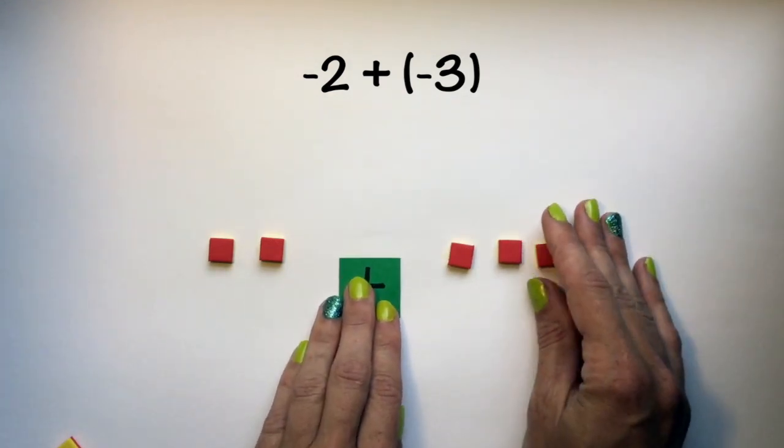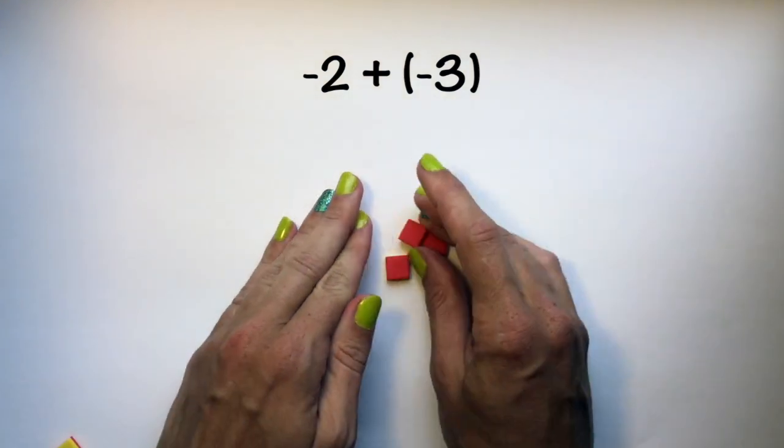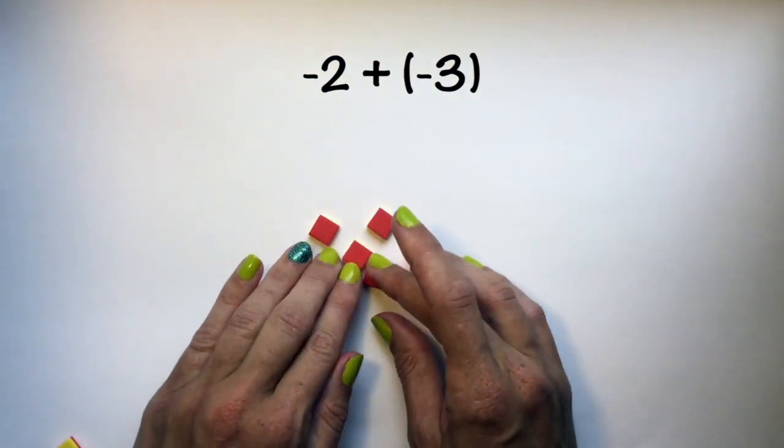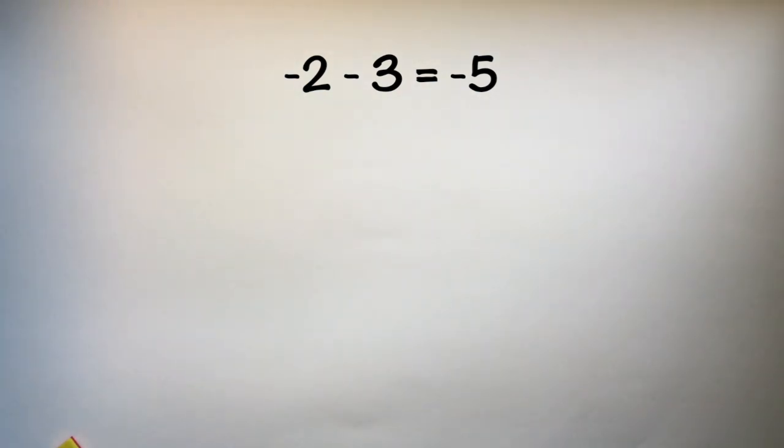And once we've changed our sign to addition, we can remove our sign and combine negative two with negative three to make negative five.